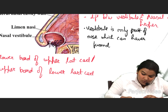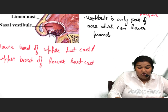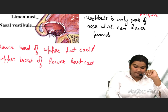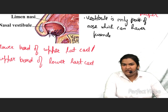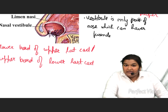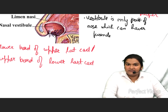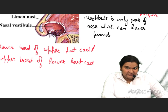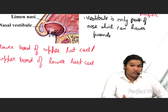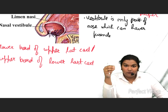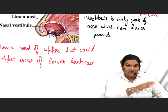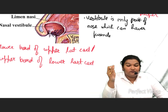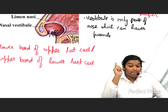The vestibule is the only part in the nose which can have a furuncle. A furuncle means inflammation of a hair follicle. Hence, we can very safely call it nasal vestibulitis — nasal furuncle equals nasal vestibulitis — because a furuncle can only be seen in the vestibule.